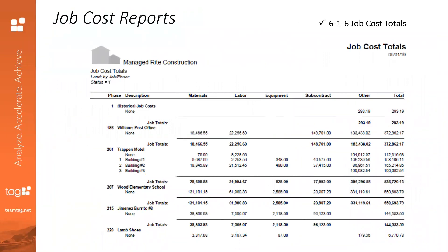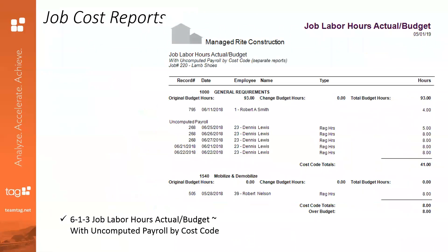Here's another great overview: Job Cost Totals. This particular version includes phases as well, so you can see a job with all of its job cost totals by category, broken up by phase. There's also the Job Labor Hours Actual versus Budget report, which includes uncomputed payroll. If you're using a tool like Sage Field Operations to bring in hours immediately, or another integrated timekeeping option, this is great — it gives you a lot of detail and can be scheduled to send out to project managers regularly.